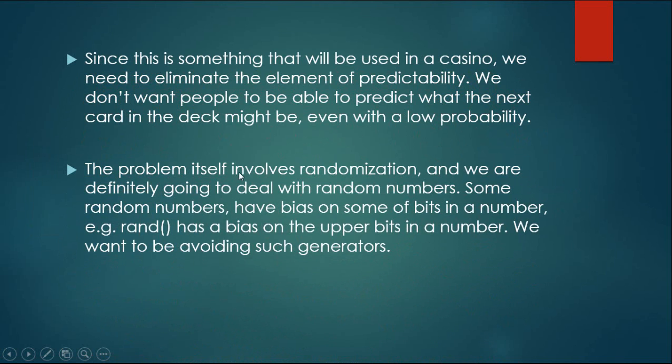The problem itself involves randomization, and we are definitely going to deal with random numbers. Some random numbers have bias on sum of bits in a number, e.g. rand has a bias on the upper bits in a number. We want to be avoiding such generators.